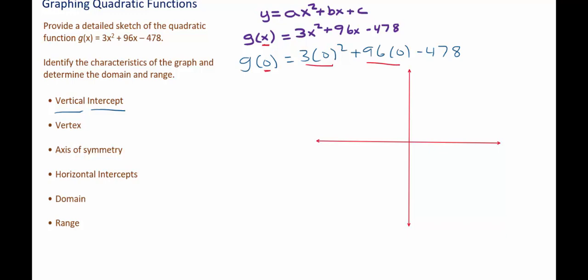Because 0 squared is 0, 0 times 3 is 0, and 96 times 0 is 0. So what happens when you replace x with 0 in a quadratic function is you're always left with the constant, which in our case is negative 478.